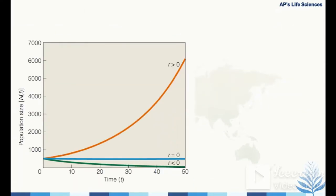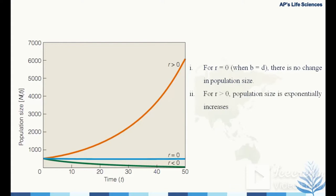In this figure, three different possibilities are shown. When r = 0, birth rate equals death rate and there is no change in population size. When r > 0, the population size exponentially increases because birth rate is higher than death rate. When r < 0, the population size exponentially decreases because of a higher death rate.